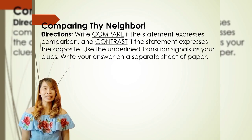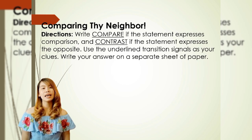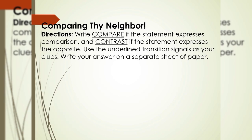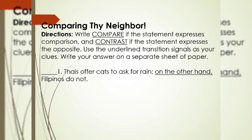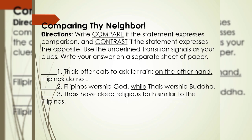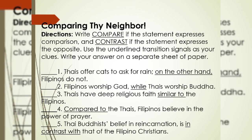What's more. Now that you have learned about comparing, contrasting, and writing your own opinions through the use of transition signals, it is time to find out whether or not you have understood the lesson. The activities that follow will help you assess your understanding of the topic. Statement number one: Thais offer cats to ask for rain. On the other hand, Filipinos do not. Statement number two: Filipinos worship God while Thais worship Buddha. Statement number three: Thais have deep religious faith similar to the Filipinos. Statement number four: Compared to the Thais, Filipinos believe in the power of prayer. Statement number five: Thais Buddhist belief in reincarnation is in contrast with that of Filipino Christians.